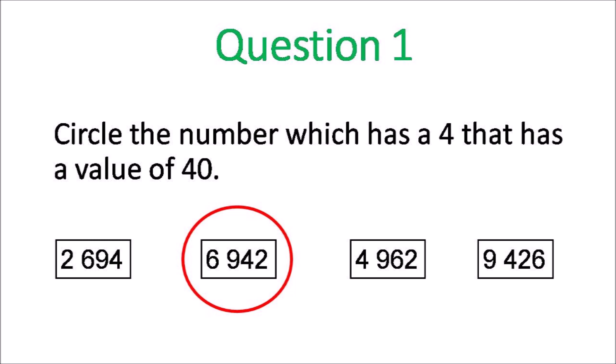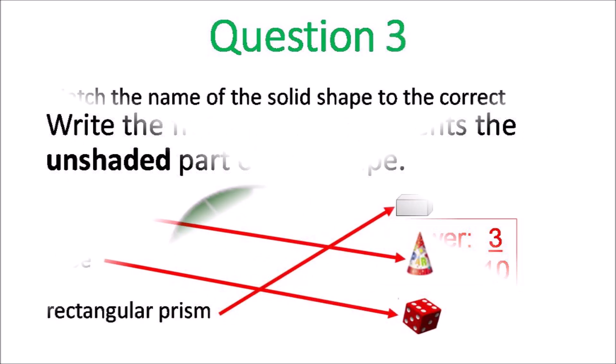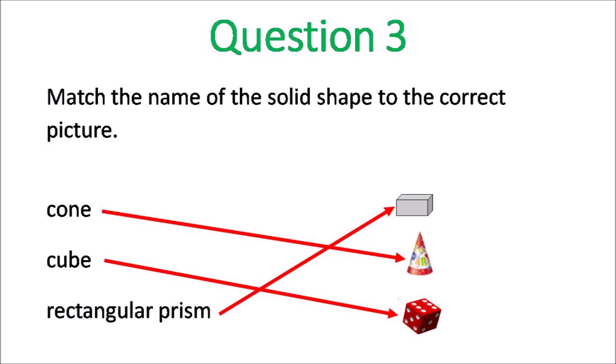The number where 4 has a value of 40 is the second one, 6,942. The unshaded part is 3 of them unshaded and it's 3 tenths. Cone in the middle, rectangular prism on top, the cube at the bottom.